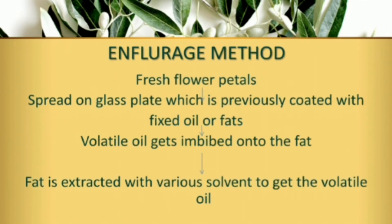For the enfleurage method, take jasmine flower petals and spread them on a glass plate that has been coated with a fixed oil or fat layer. The volatile oil from the petals is absorbed into the fat. This is the principle of the enfleurage method — volatile oil and fat interact during the process.